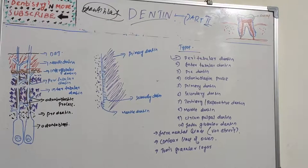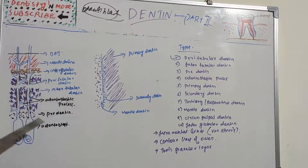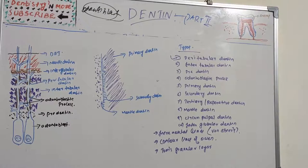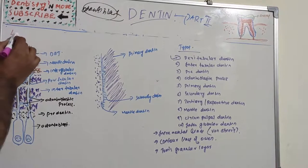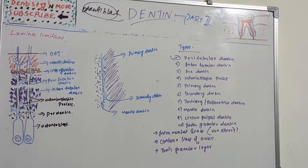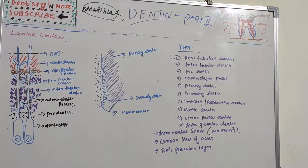Intertubular dentine is between the tubules. Peritubular dentine is more mineralized than intertubular dentine and is twice as thick in the outer dentine than the inner dentine. The calcified tubule wall has an inner organic lining known as the lamina limitans.